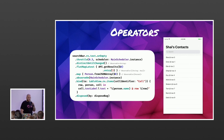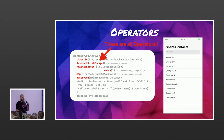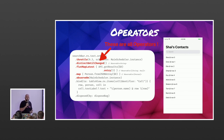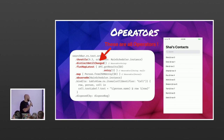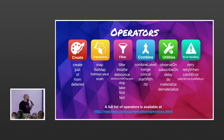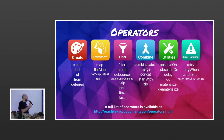All of those — throttle, distinctUntilChanged, and the rest — are operators bundled with RxSwift that you can use on any stream. For example, if you have a long-running video processing job that fails, you can just use retry and it will retry without any custom logic — you get that for free with Rx. These are the most common operators you'd use day-to-day. Covering each one would be out of scope here, but the documentation is really good.